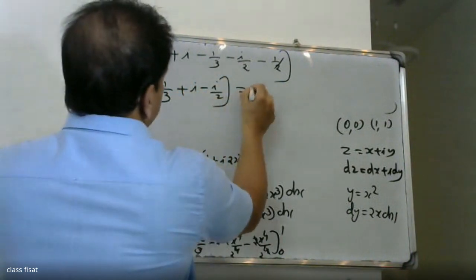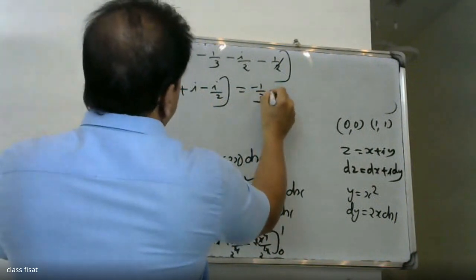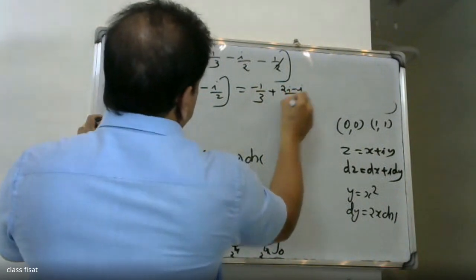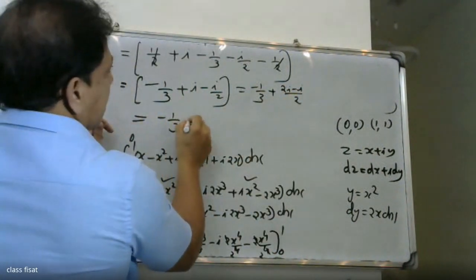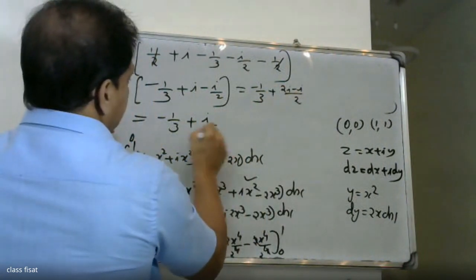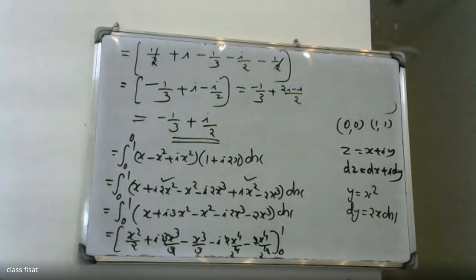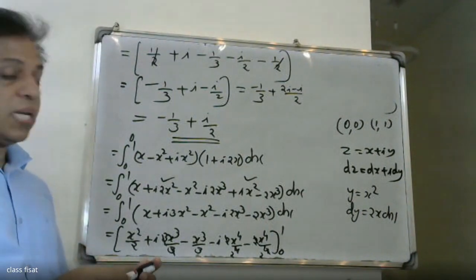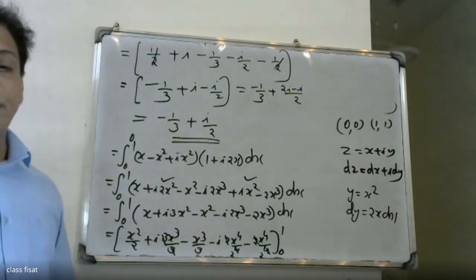After applying the limits, combining real and imaginary parts gives 1 by 3 plus 2i minus i by 2. That is minus 1 by 3 plus i by 3. The final answer is minus 1 by 3 plus i by 3.